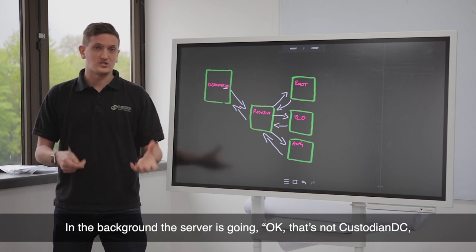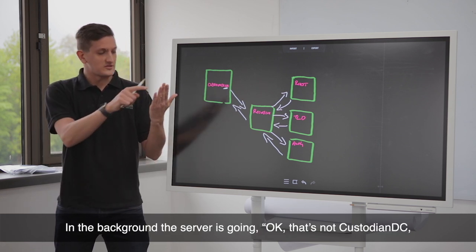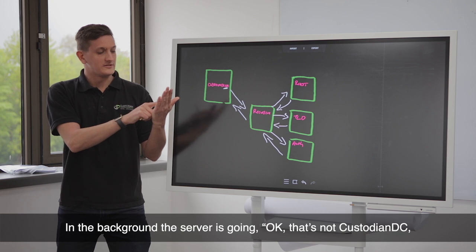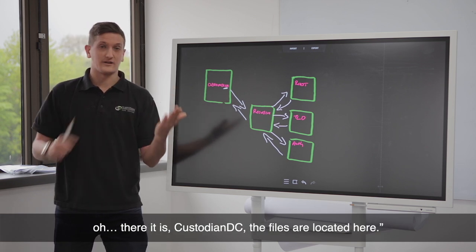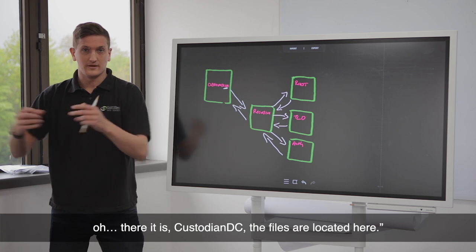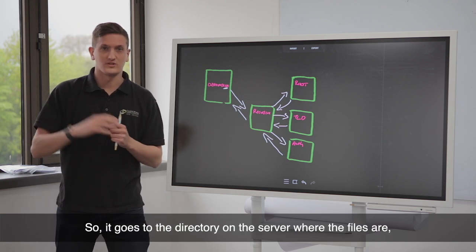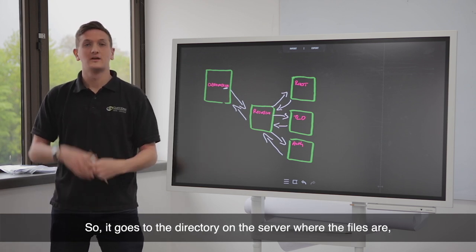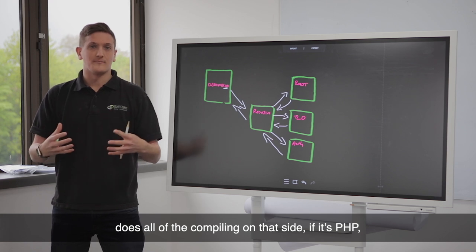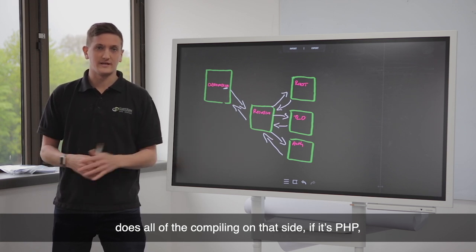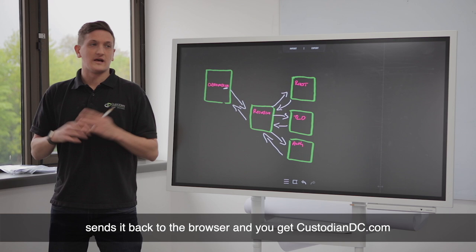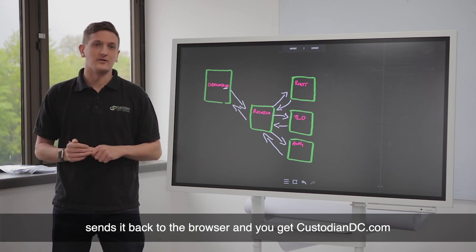In the background, the server's going, okay, that's not custodiandc.com, that's not custodiandc.com. So it goes to the directory on the server where those files are, does all the compiling if it's PHP, sends it back to the browser, and you get custodiandc.com.